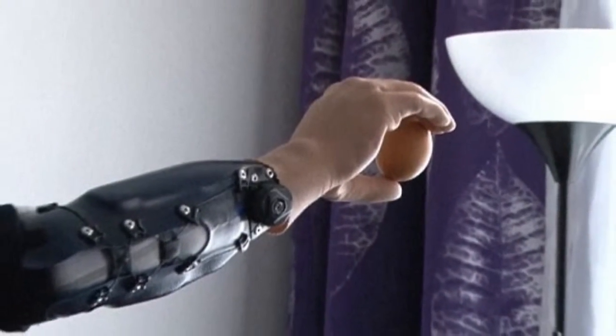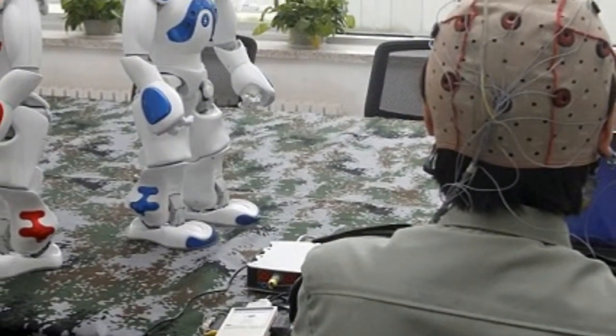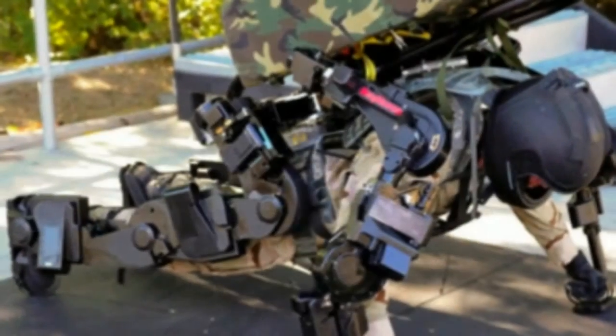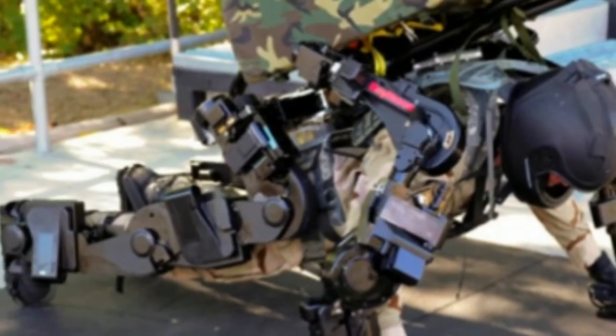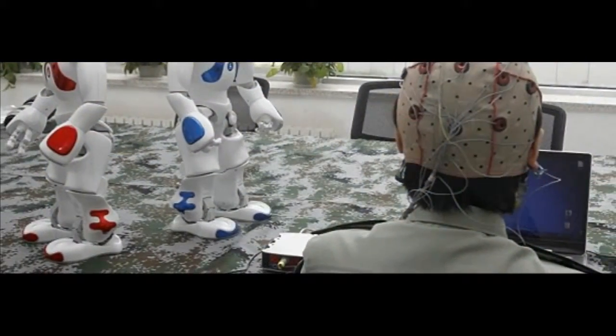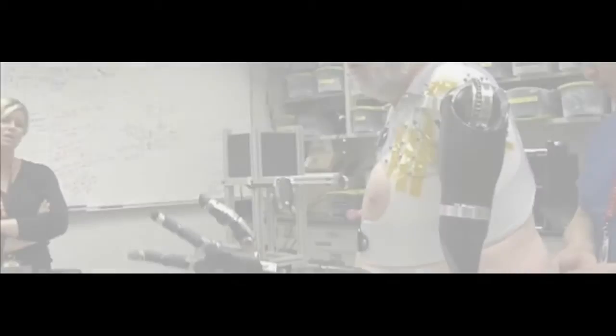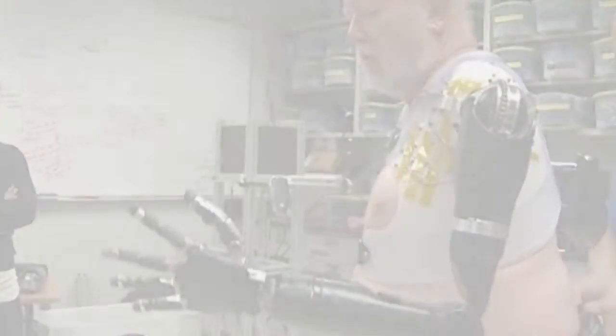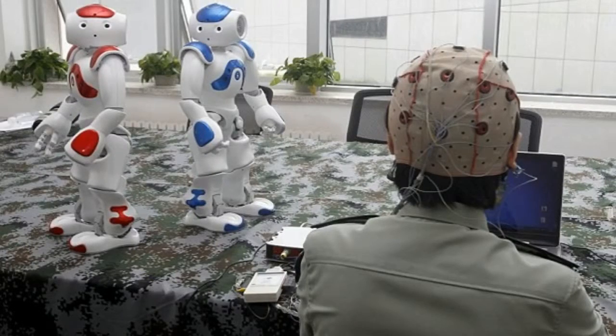China has been training students at a military academy to use headsets that detect and interpret the brain activity of the wearer, allowing them to control the machines. At a demonstration at the People's Liberation Army Information Engineering University in Zhengzhou, students used the device to send robots trundling in different directions. They were also able to turn the robots' heads and get them to pick up objects.